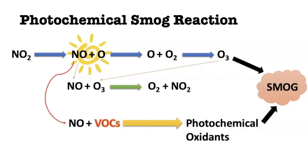The problem occurs when VOCs are present. When VOCs are present, the second reaction — ozone reacting with nitric oxide — cannot take place. VOCs actually hijack the reaction and stop that second formula by binding with nitric oxide. So NO and VOCs combine to create something called photochemical oxidants. Because NO is no longer available to O3, ozone just floats around in the atmosphere. Once those photochemical oxidants are available, they combine with the O3 and now we get smog.